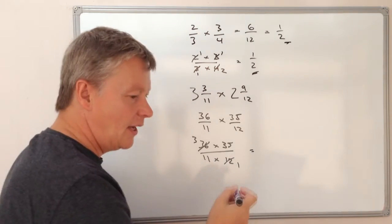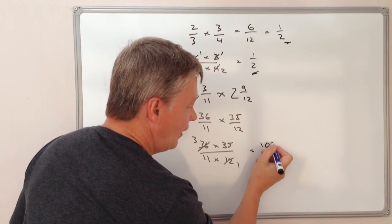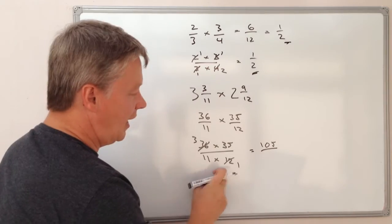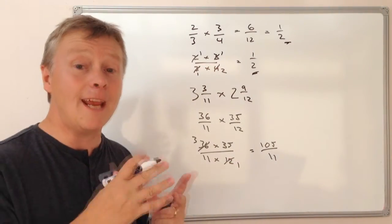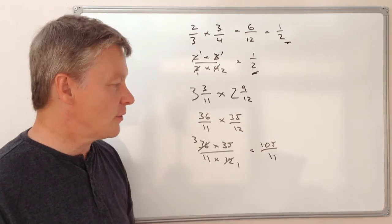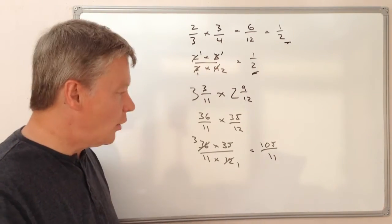So 3 times 35 is going to be 105, and 11 times 1 is 11. So actually the answer to this question as an improper fraction is 105 divided by 11.